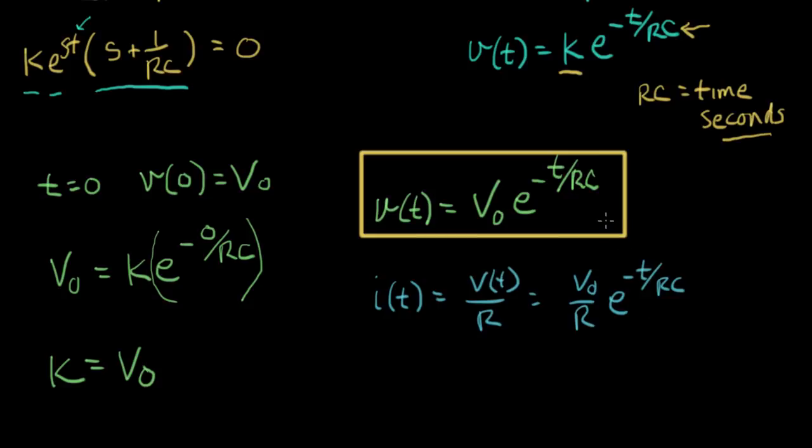We just derived what the current is and the voltage. These are both the natural response of the RC circuit. Now what I did is I went ahead and I plotted out this using a computer, just using Excel, to plot out what these two expressions look like, and let me show you that.